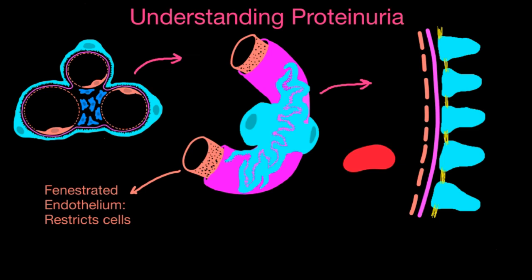The fenestrated endothelial layer is important because its pores are large enough to allow plasma through — so serum plus all the plasma proteins can make it through — but it restricts cells. White blood cells and red blood cells are too large to pass through. This forms the first important barrier.